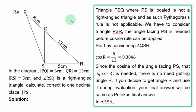Question 13A. In the diagram, PQ is 6 cm, QR is 13 cm, RS is 5 cm, and angle RSQ is a right angle triangle. Calculate, correct to 1 decimal place, PS.